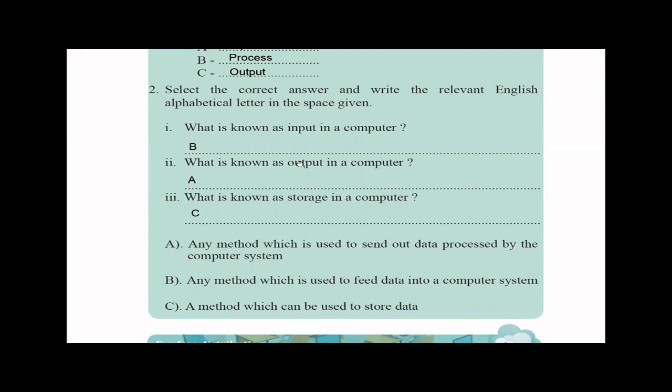What is known as output in a computer? So output, as we read, this is the answer: any method which is used to send out data processed - not the data, actually it should be the data processed means information, right? So information by the computer system, that means kind of like the computer monitor or the printer, something like that, output devices.